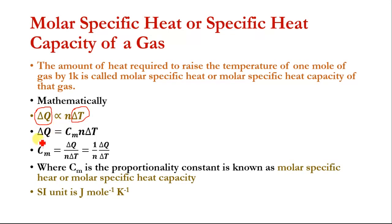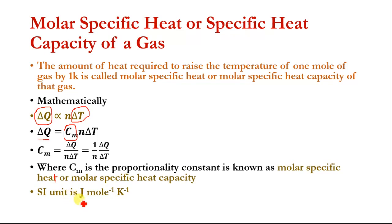We can write this equation as del Q is equal to C_m times n times del T, where C_m is the constant of proportionality and is known as the molar specific heat or molar specific heat capacity. The SI unit of molar specific heat capacity is Joule per mole per Kelvin.